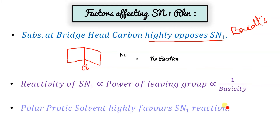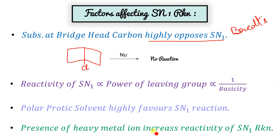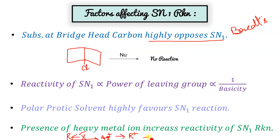Polar protic solvent highly favors SN1 — electronegativity difference present and it should donate H+. Presence of heavy metal ions like Ag+ or Pb2+ increases SN1 reactivity: the heavy metal takes the halide X minus, forming a compound like AgX, which facilitates faster carbocation formation and faster SN1 reaction.